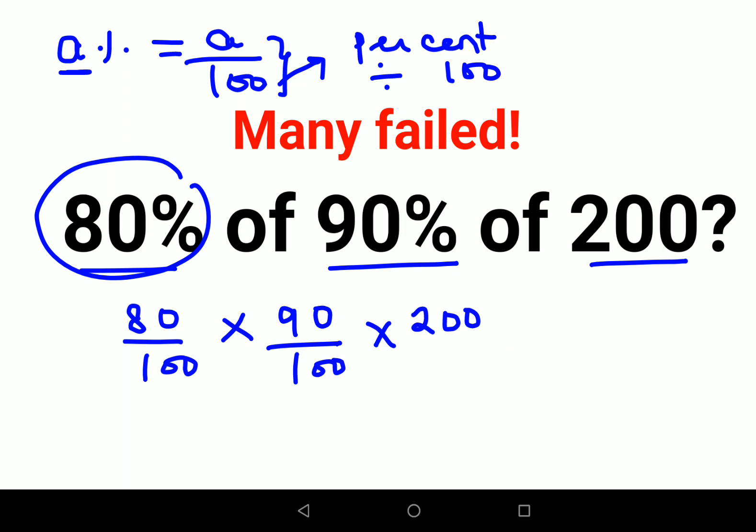Now if you see, the zeros are canceling. So basically you are left with 8 into 9 into 2. So that is nothing but 72 into 2. So the answer for this one comes out to be 144.